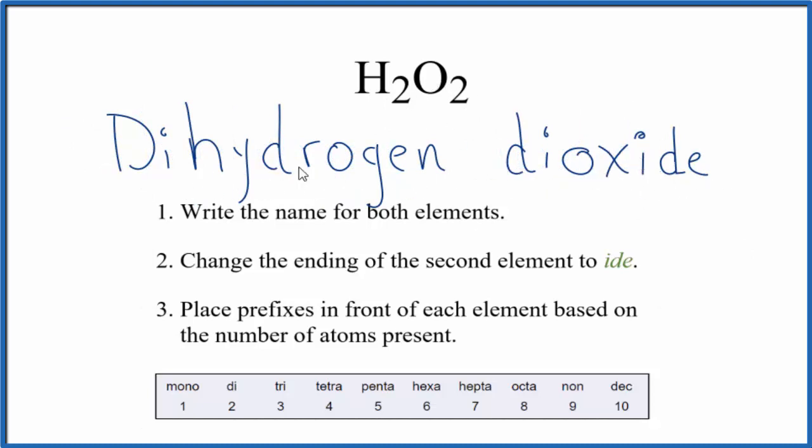If you saw this name, you'd know that you have hydrogen, two of them, so H2, and then oxygen, two of those, O2. So H2O2, the name dihydrogen dioxide.